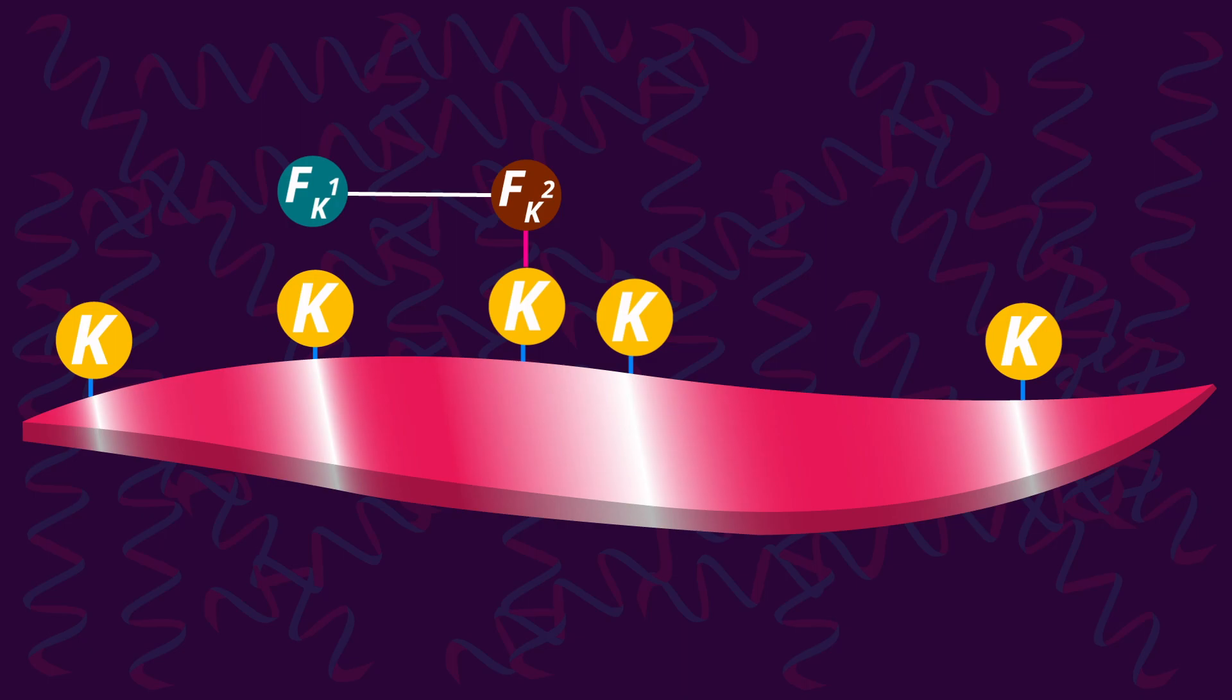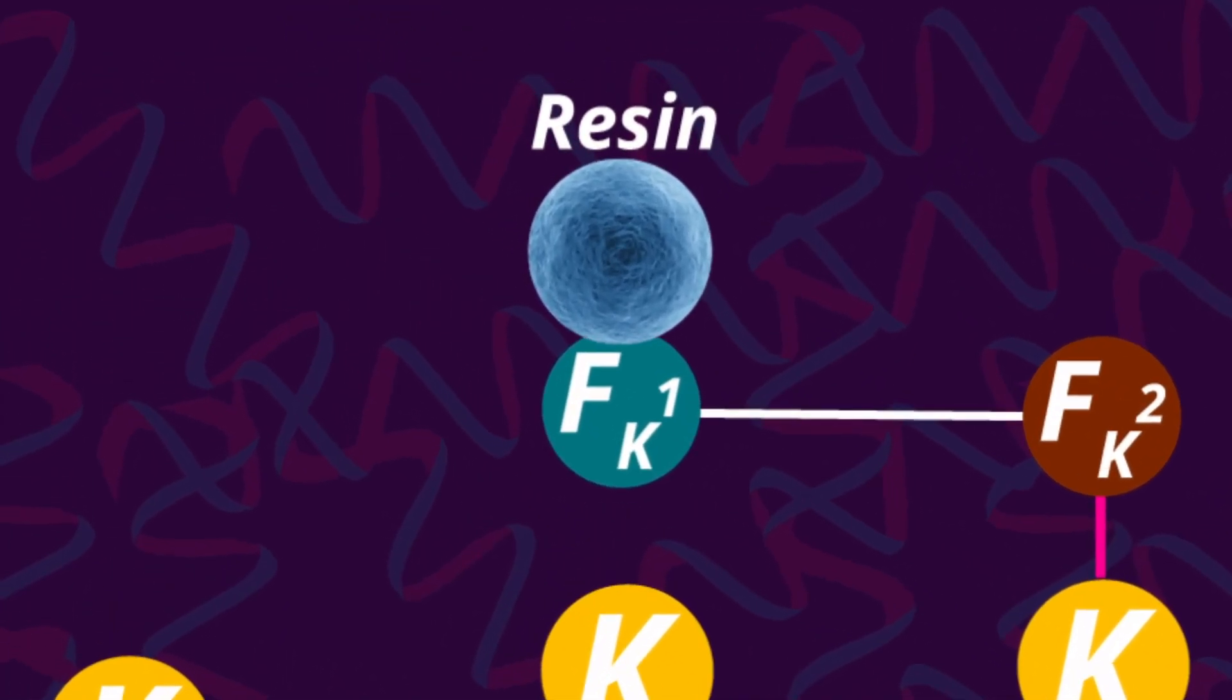At this point, using a special resin, the proteins that reacted with FK2 can be recovered using a process called immobilization.